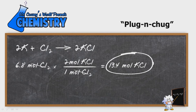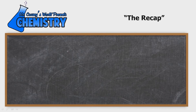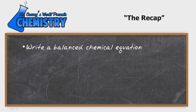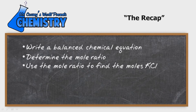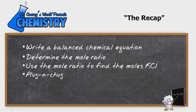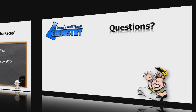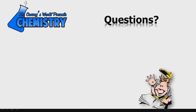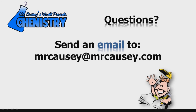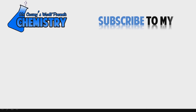And we're done. The recap: write a balanced chemical equation, determine the moles, use that mole ratio to find the moles of potassium chloride, plug and chug. That was quick and simple. If you have any questions, send an email to mrkazi at mrkazi.com. And be sure to sign up for my YouTube.